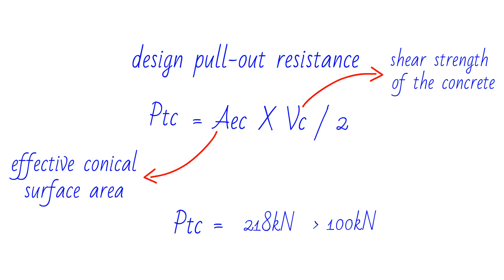In conclusion, the tension capacity and pull-out resistance of holding down bolts are critical factors in the design of any structure. By following the steps outlined in this tutorial, you can ensure that your bolts are strong enough to keep your structures in place and prevent them from collapsing. Thank you for watching.